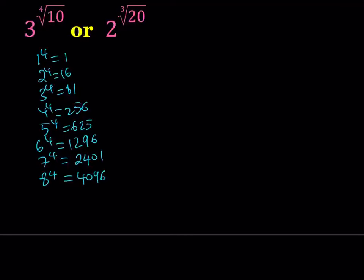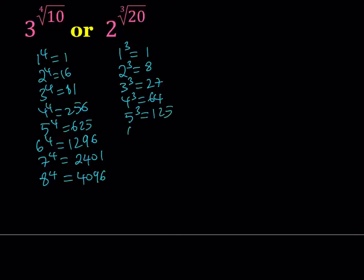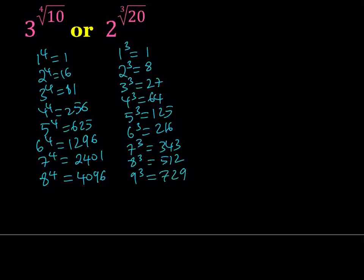Now let me list the cubes. 1 cubed is 1, 2 to the 3rd is 8, 3 to the 3rd is 27, 4 to the 3rd is 64, 5 to the 3rd is 125, 6 to the 3rd is 216, 7 to the 3rd is 343. If you've dealt with numbers a lot, you can memorize these easily. 9 cubed is 729, 10 cubed is 1000, and 11 cubed is 1331. This list should be good enough.